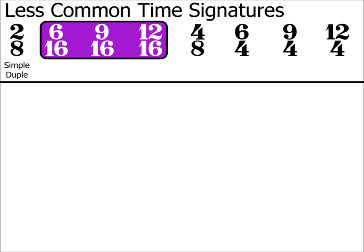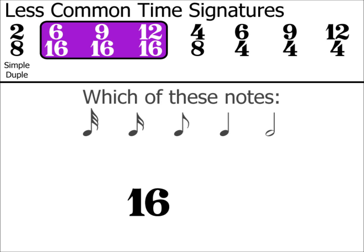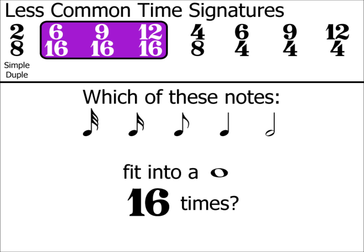6/16, 9/16, and 12/16 are time signatures which pop up every now and again, so it's worth knowing what they mean. This is the first time I've mentioned time signatures with a 16 at the bottom, so let's just take a moment to calculate which beat is being used. You'll remember from part 1 that we need to work out which note fits into a semibreve 16 times, 16 being the number at the bottom of the time signatures.